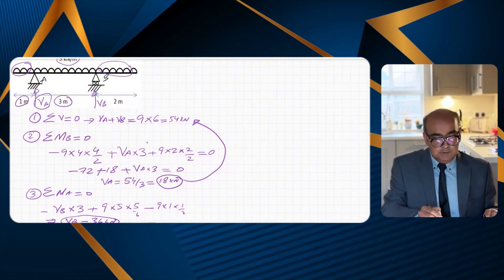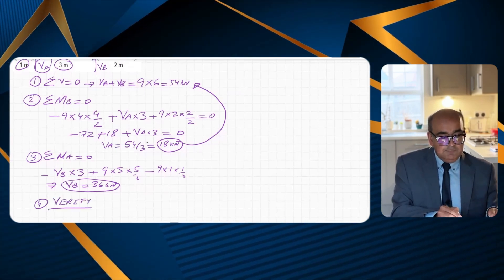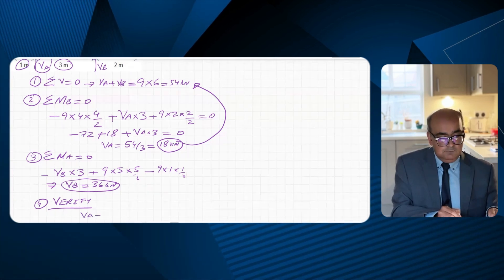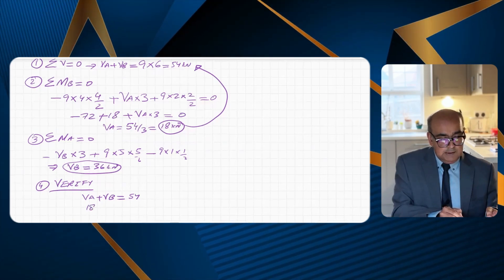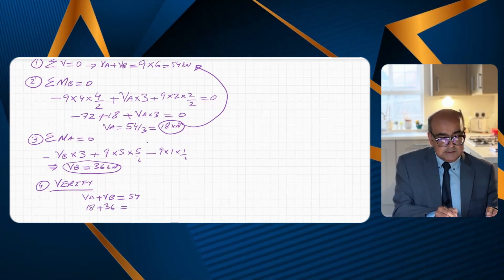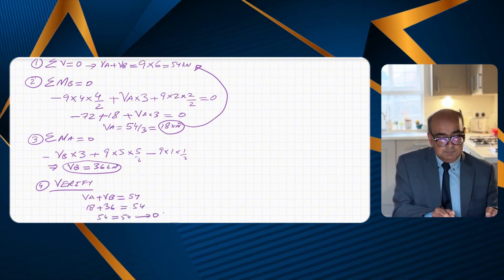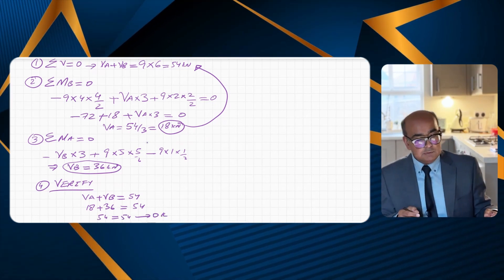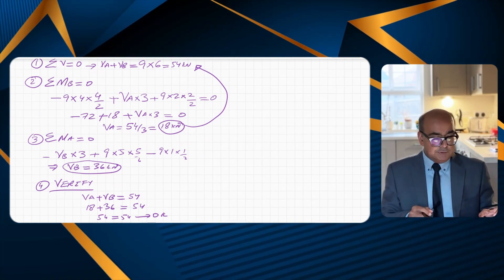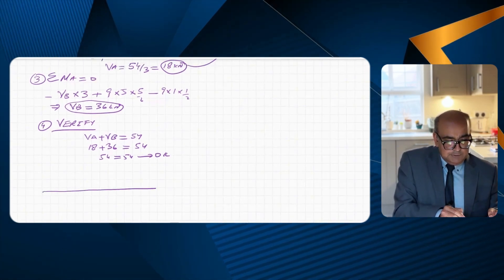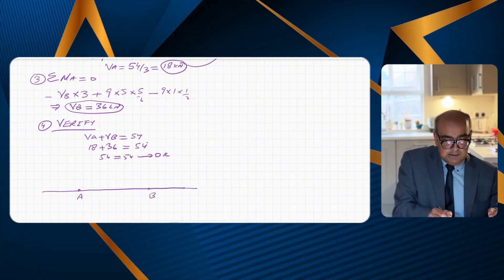My fourth step is to verify: VA plus VB should equal 54. With VA equal to 18 and VB equal to 36, we get 18 plus 36 equals 54 — confirmed. Next, I will find the position of zero shear force by plotting the shear force diagram. Point A is the left support, point B is the right support, and there is an overhang portion.